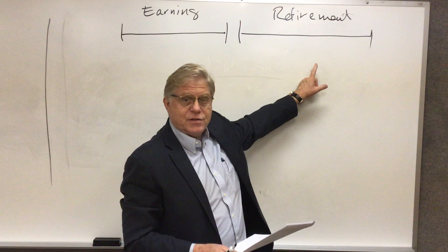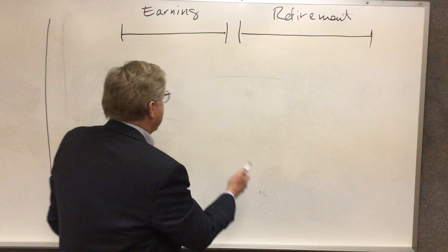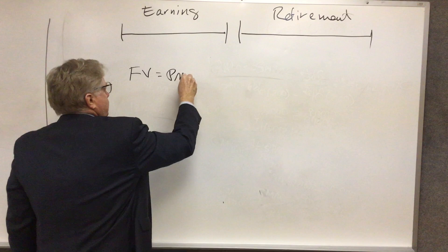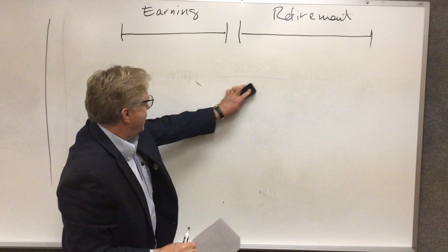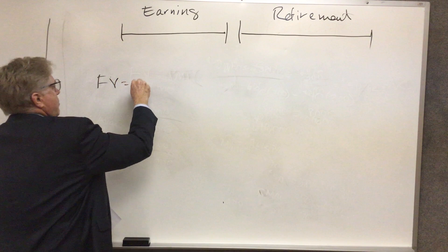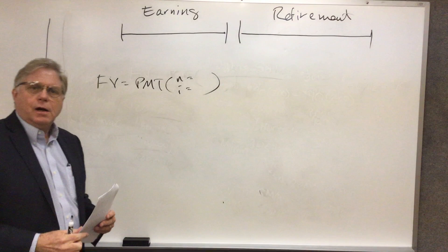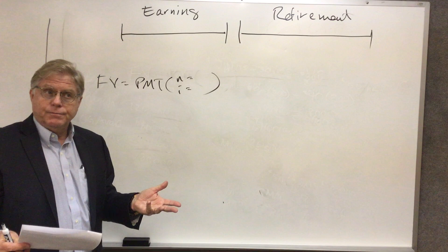And starting over here, we've got the future value of annuity application. As you've seen, what I call the usable form of the model looks like this. I'm going to write a little bit further over this way, give myself a little more room.